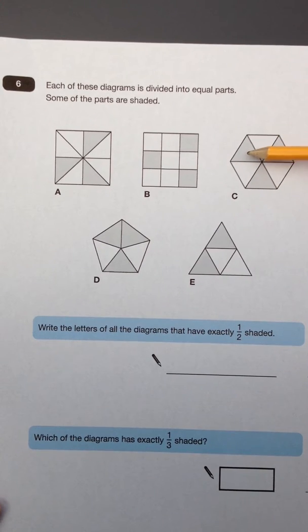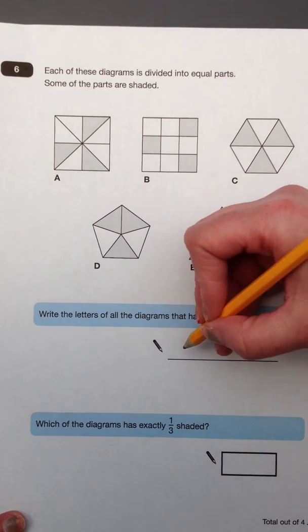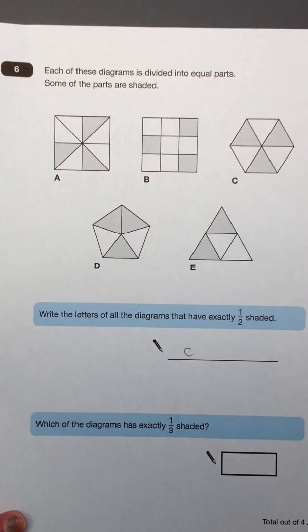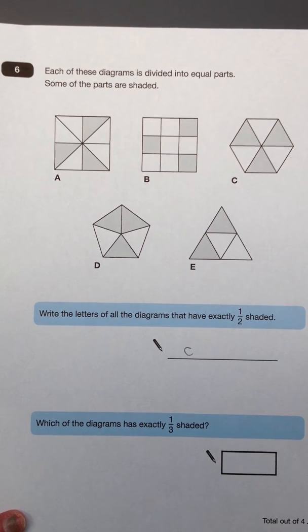C has been divided into 1, 2, 3, 4, 5, 6 equal pieces. 3 of them have been shaded. 3 is half of 6, so C does have exactly half shaded.